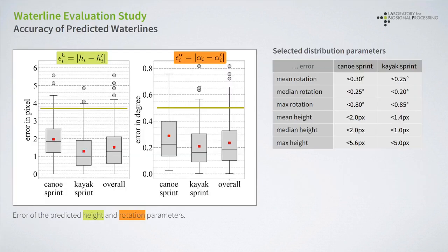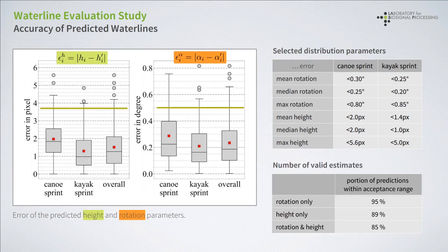Given this gold standard, we assessed the accuracy of the waterline prediction method with respect to the expert annotations. The results for the height parameter are shown on the left and for the rotation parameter on the right. The dark yellow bars denote the acceptance range. The results obtained for canoesprint appear to be slightly worse than for kayak sprint; however, the majority of results are still much lower than the gold standard, with only a minor portion exceeding this range. Overall, 85 percent of the results fall within this range when both parameters are considered together, showing that the method provides robust and valuable estimates of the waterline.